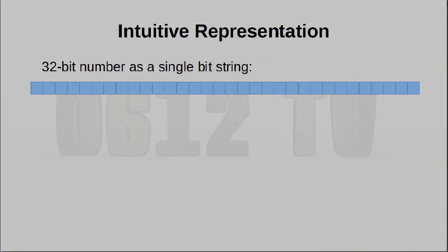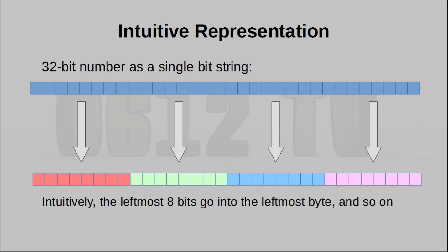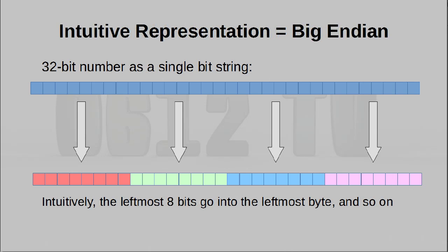The weirdness with endedness is that when we want to express these 4 bytes in memory, we can actually stick them there in any order. Now obviously the more intuitive kind of ordering would be the most significant bits go to the left, and we basically populate the smaller and smaller values towards the right — just like how we actually represent a number when we write it down on paper. This is called Big Endian.